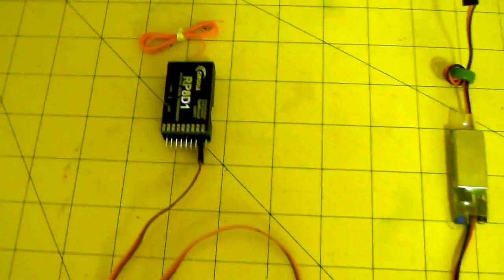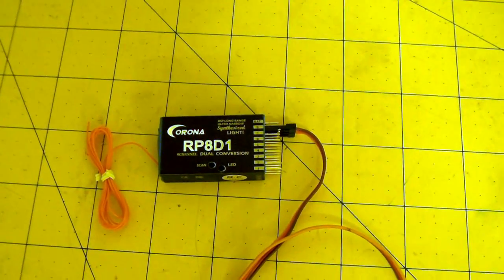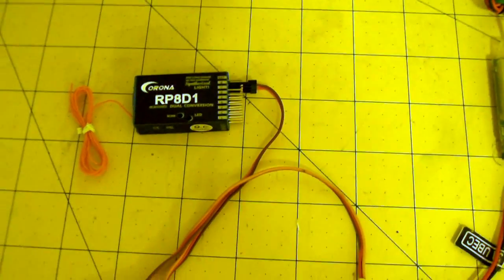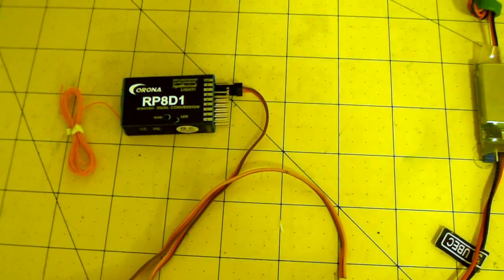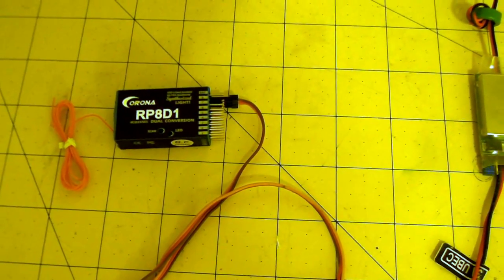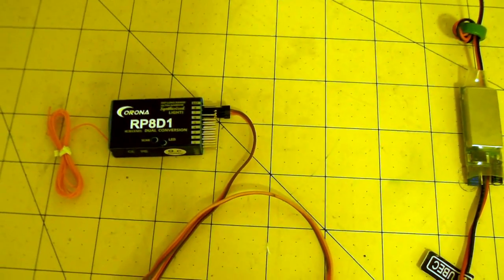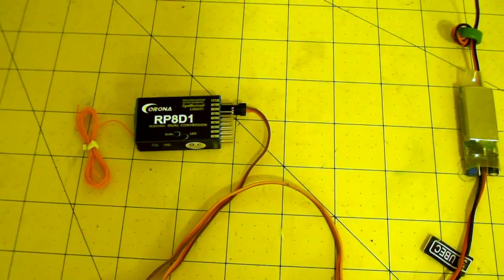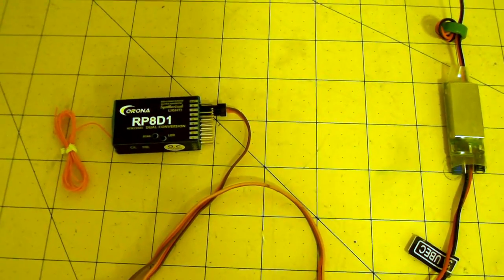I'm going with 72 megahertz - the Corona RP8D1. This is an 8-channel, I think, or 9-channel 72 megahertz receiver. I bought a couple of those. I should be able to get much better range out of these than I can out of my Spektrum gear. I'm pretty much done with Spektrum for FPV.